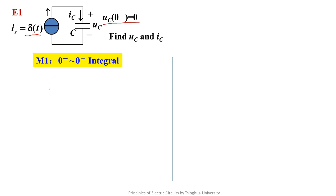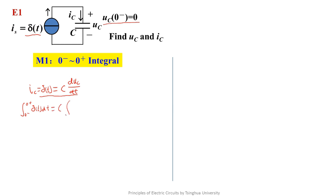Let's focus on this circuit. In this circuit, we know Ic equals delta(t) equals C times dUc/dt. This is the only equation we can list for this circuit. We should find the integral from zero-minus to zero-plus. The integral of delta(t) from zero-minus to zero-plus equals C times the integral of dUc/dt from zero-minus to zero-plus.